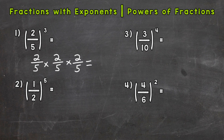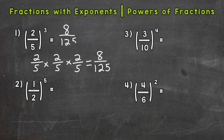It's just multiplying fractions at this point, which is multiply straight across. So two times two is four, times two is eight. Five times five is twenty-five, times five is one-hundred-twenty-five. So our answer is eight over one-hundred-twenty-five.